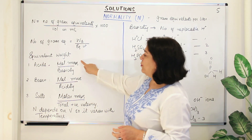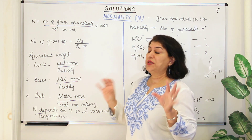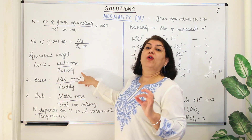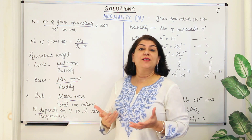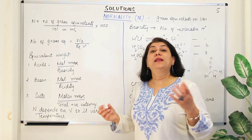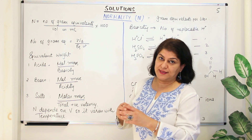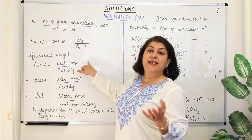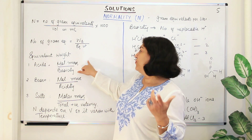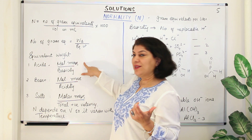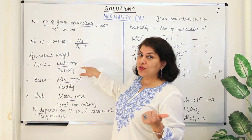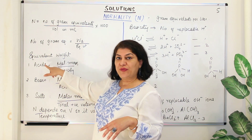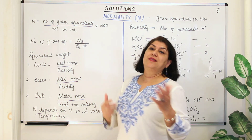The molecular mass of the solute is always in the numerator. For acids, the equivalent weight equals the molecular mass divided by the basicity of the acid. Basicity is the number of replaceable hydrogen ions in one mole of the acid. For example, HCl has one replaceable hydrogen ion so its basicity is one. H2SO4 has two replaceable hydrogen ions, so its basicity is two, and you divide the mass of H2SO4 by two.